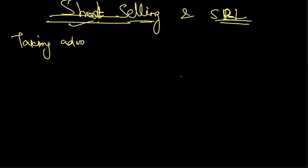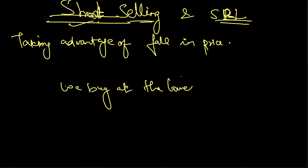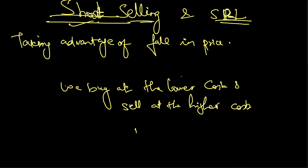Taking advantage of a fall in price means you will get profit when the price comes down. In your normal course of business, what happens is we buy at the lower cost and sell at the higher cost — that's how we make profit. For example, buying a product at 100 and selling it for 120 gives us 20 rupees profit.